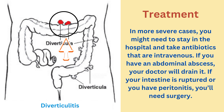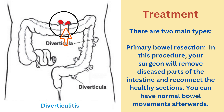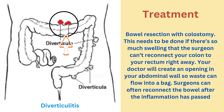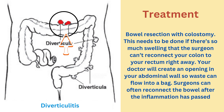There are two main types of surgery. The first is primary bowel resection, where the surgeon removes diseased parts of the intestine and reconnects the healthy sections, allowing for normal bowel movements afterwards. The second is bowel resection with colostomy, needed when there is too much swelling to reconnect the colon to the rectum right away. The doctor creates an opening in the abdominal wall so waste flows into a bag, and surgeons can often reconnect the bowel after the inflammation has passed.